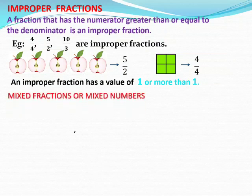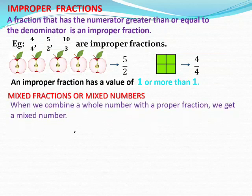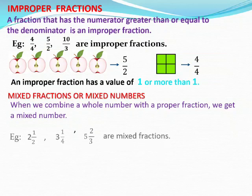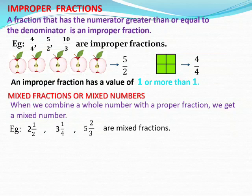Next, mixed fractions or mixed numbers. What are mixed fractions? When we combine a whole number with a proper fraction, we get a mixed number. For example, 2 and 1 by 2: here 2 is a whole number and 1 by 2 is a proper fraction, so 2 and 1 by 2 is a mixed number. 3 and 1 by 4 is also a mixed fraction. And 5 and 2 by 3 is also an example of a mixed number or mixed fraction.